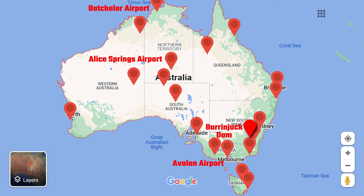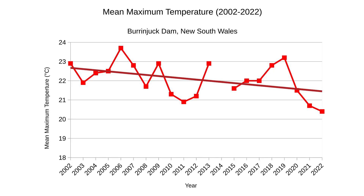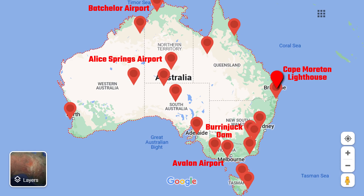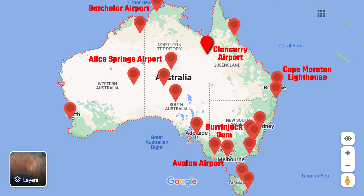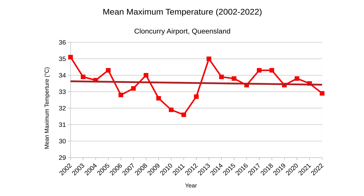The next location is Burunjuck Dam in New South Wales. There's no doubt that the annual mean maximum temperature is trending downwards — I'm not here to explain it, I'm just here to show you the data. Our next location is the Cape Moreton Lighthouse off the coast of south-east Queensland, a nice breezy location. According to the Bureau's own data, the mean maximum temperature has been trending downwards over the last 20 years. Our next location is Cloncurry Airport in rural Queensland — the temperature data shows it's slightly decreasing too.